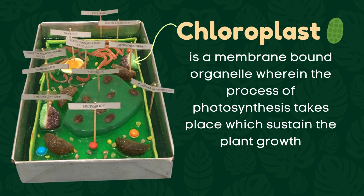Chloroplast. Chloroplast is a membrane-bound organelle where the process of photosynthesis takes place, which sustains plant growth. We used a gummy watermelon that has a green color on it. This green color represents the green pigment called chlorophyll that is found in the chloroplast.